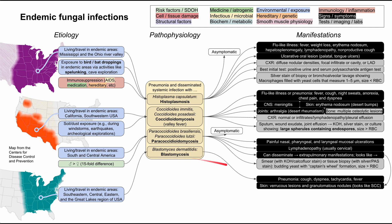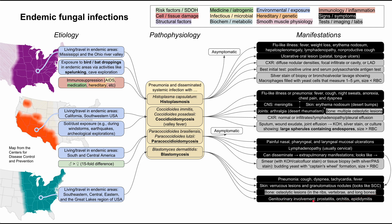Blastomycosis can also cause a pneumonia-like presentation with cough, dyspnea, tachycardia, and fever. Characteristic skin symptoms include verrucous lesions and granulomatous nodules resembling squamous cell carcinoma. Bone involvement includes osteolytic lesions in the ribs, vertebrae, and long bones, causing pain and possible fractures. Genitourinary involvement can include prostatitis, orchitis, or epididymitis, causing urinary problems, pain, or inflammation in the groin area.